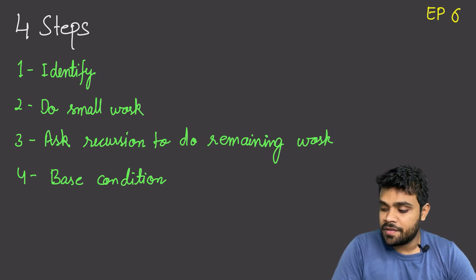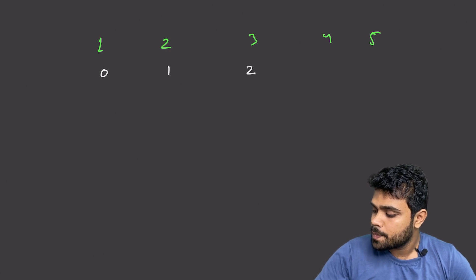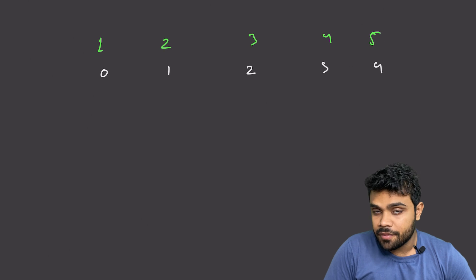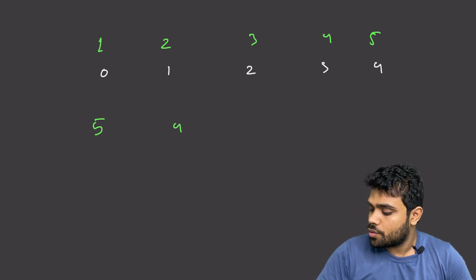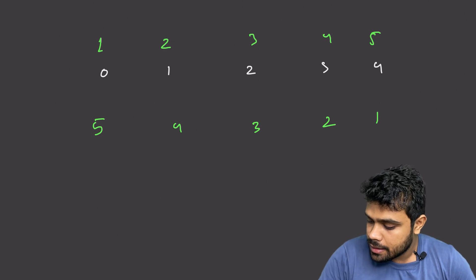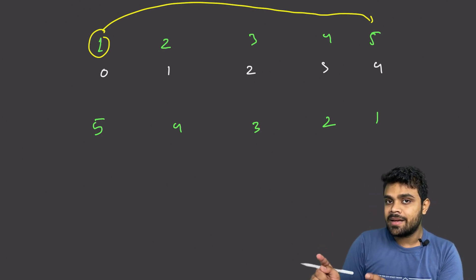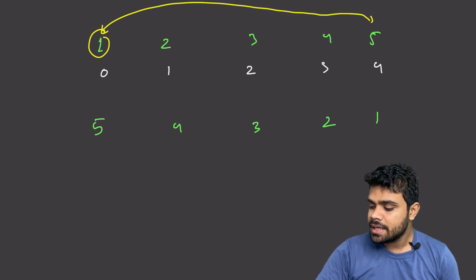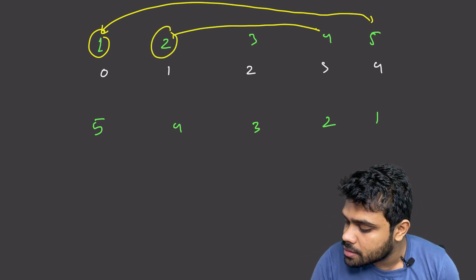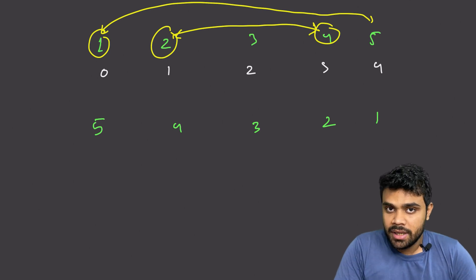The problem is to find the reversal of an array. We are given an array and have to reverse it using these four steps. The given array is [1, 2, 3, 4, 5] with indices 0 through 4. After reversal, it would be [5, 4, 3, 2, 1]. When we reverse an array, the first and last elements are swapped, the second and second-last are swapped, and so on.